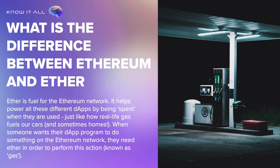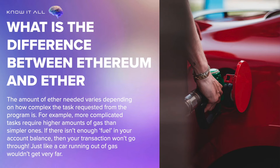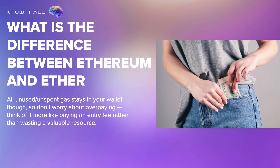Ether is fuel for the Ethereum network. It helps power all these different dApps by being spent when they are used, just like how real-life gas fuels our cars and sometimes homes. When someone wants their dApp program to do something on the Ethereum network, they need Ether to perform this action, known as gas. The amount of Ether needed varies depending on how complex the task is. If there isn't enough fuel in your account balance, then your transaction won't go through — just like a car running out of gas wouldn't get very far. All unused or unspent gas stays in your wallet, so don't worry about overpaying.